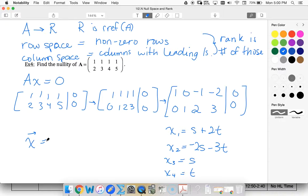So looking at it in parametric form, I would have 1, negative 2, 1, 0s plus 2, negative 3, 0, 1t. I've got two vectors.